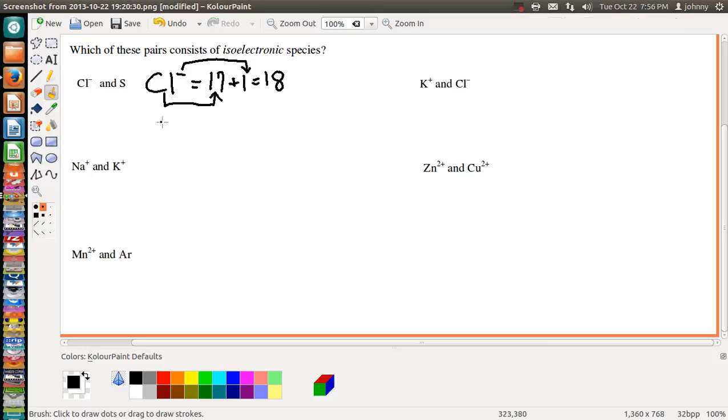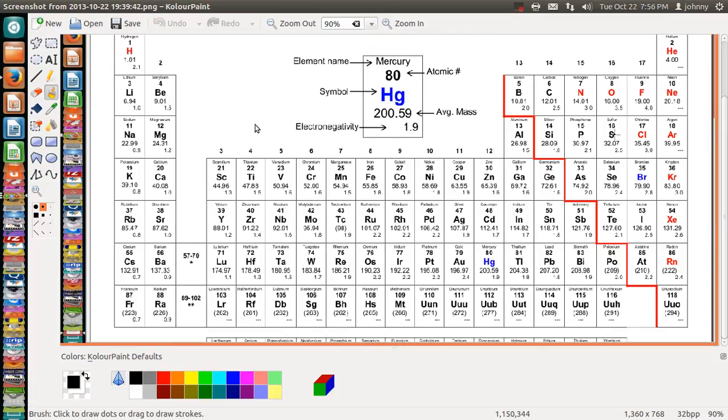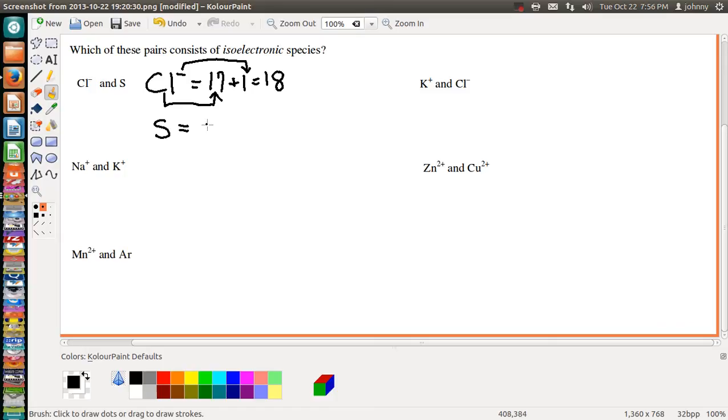Now what we need to do is we need to look up sulfur. We need to see if sulfur also has 18 electrons. Sulfur, which is neutral in this case, has only 16 electrons. So since these two do not have identical numbers for their total electrons, then they're not isoelectronic. These two are not isoelectronic.